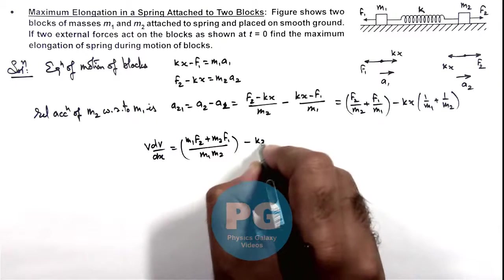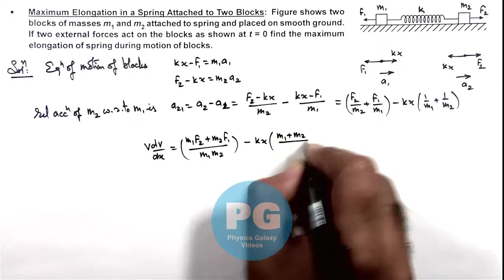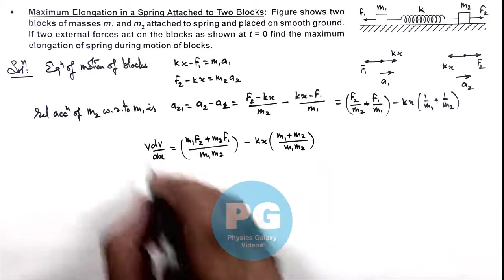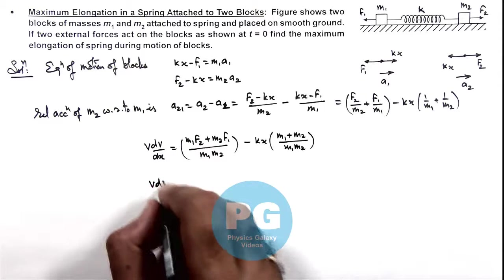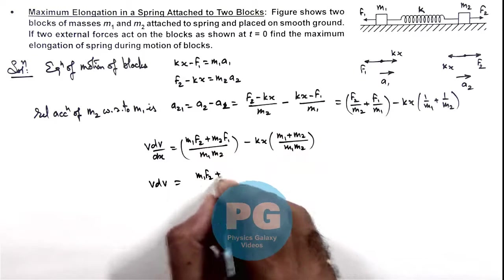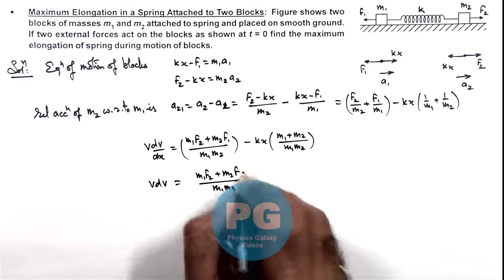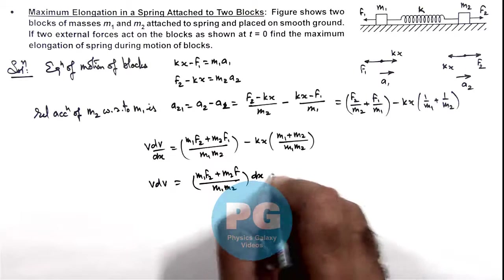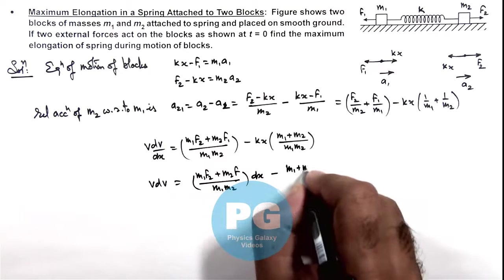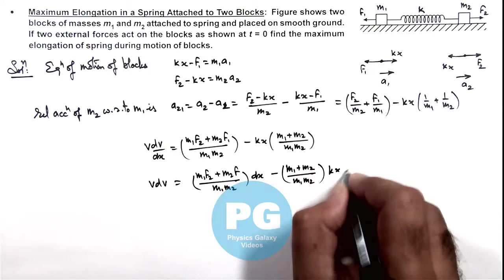Minus kx multiplied by m₁ plus m₂ upon m₁m₂. Here we can further write vdv is equal to this whole term m₁f₂ plus m₂f₁ by m₁m₂ minus kx dx.